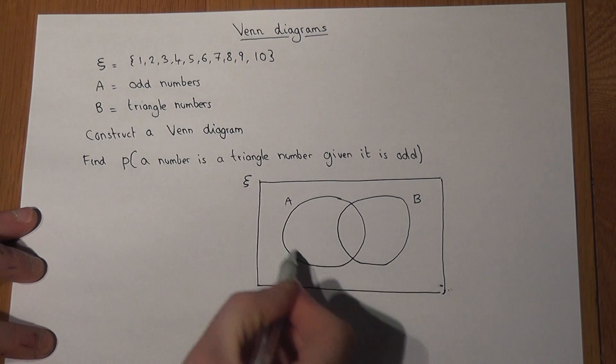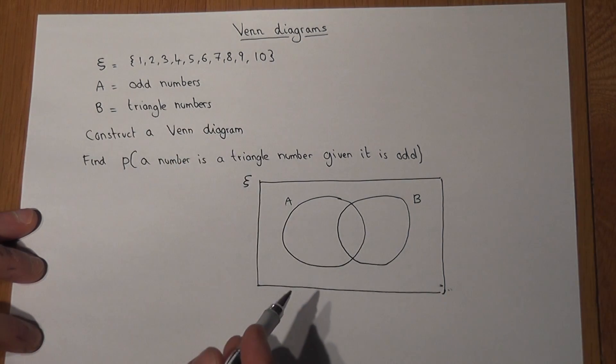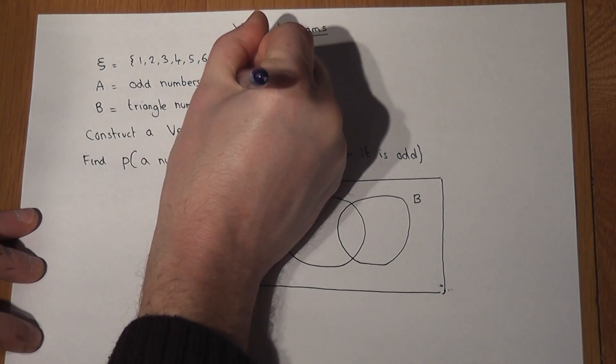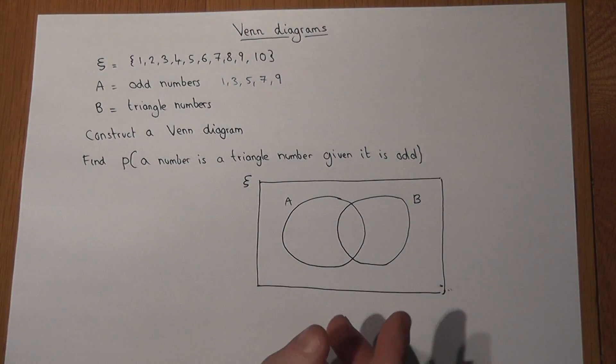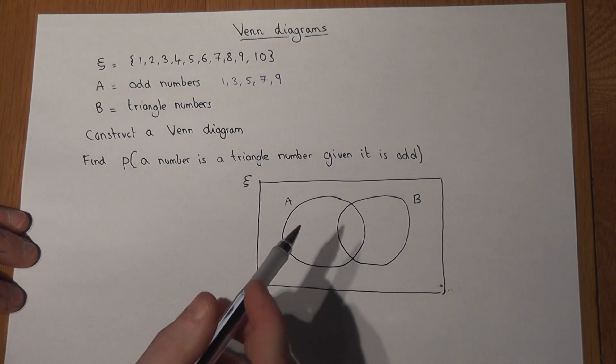And set A are those which are odd, so 1, 3, 5, 7 and 9. It can help to list the numbers to start off with.